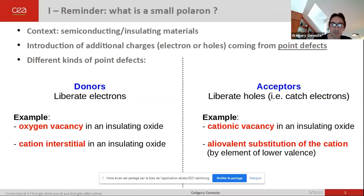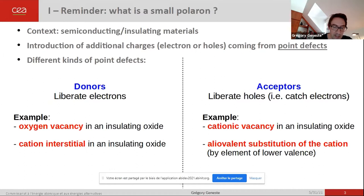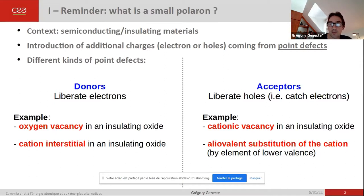The context is the physics of semiconducting and insulating materials. As you know, these compounds always contain, intentionally or not, some point defects. And you can divide most of these point defects into two families: donor point defects, which have the capacity to liberate electrons, and acceptor point defects, which have the capacity to liberate holes — that is to say, they catch electrons.